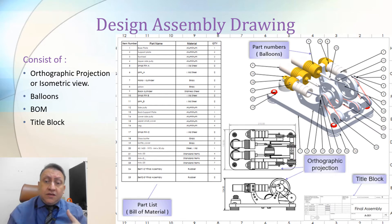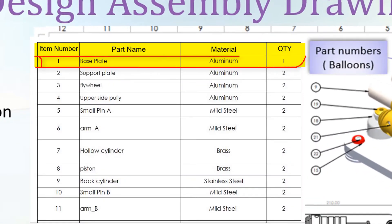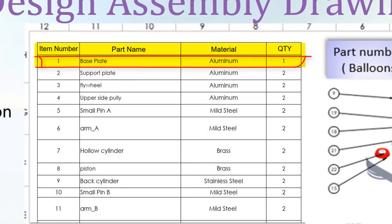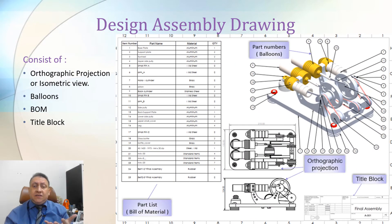Then it will take me to other element of engineering drawing, which is the part list or bill of material. So I go here, part number one, it's base plate, and aluminum, the quantity is one. So now I can understand that each part here is reflected on the bill of material.